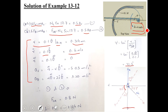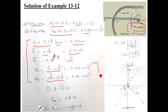With θ̈ = 0 and R̈ = 0, the accelerations are: AR = R̈ − Rθ̇² and Aθ = Rθ̈ + 2Ṙθ̇. Substituting the known values gives the numerical values of AR and Aθ.